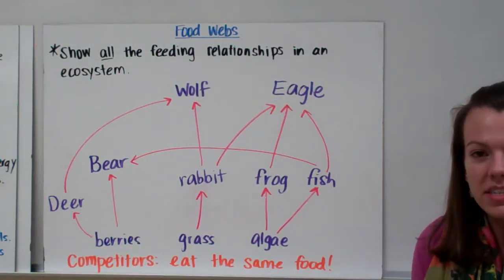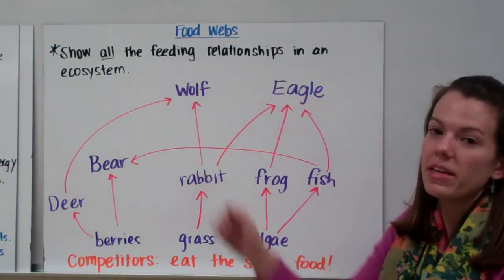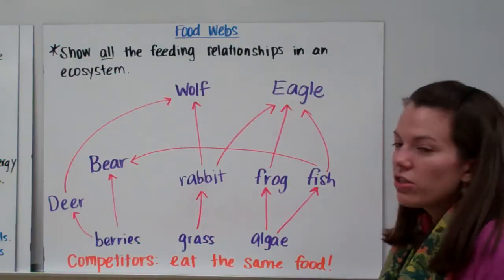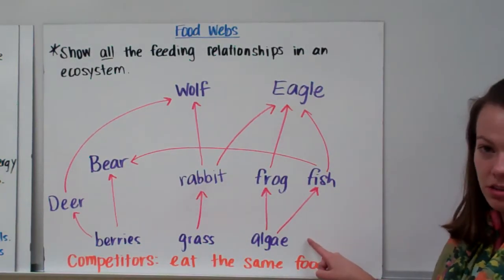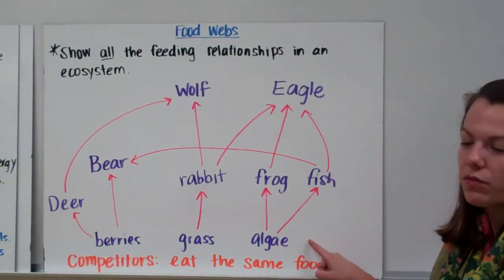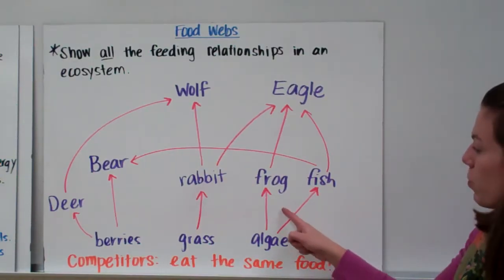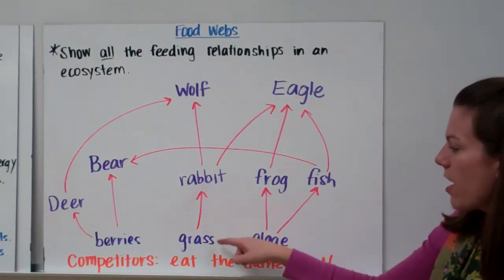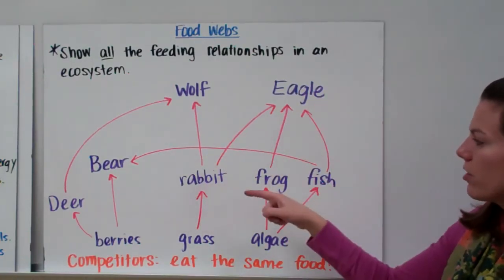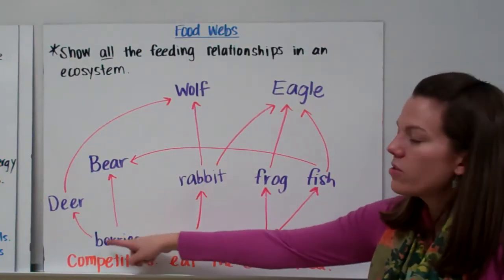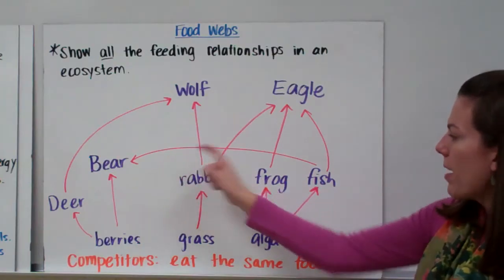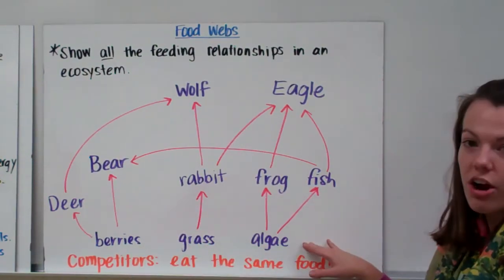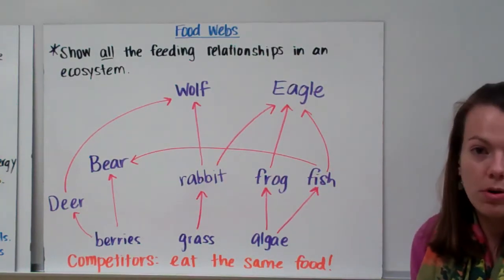Let's look at food webs. You've probably seen diagrams like this before — they show all of the feeding relationships in an ecosystem, not just one thing eating another, but what everything is eating. We have berries, grass, and algae. They all get energy from the sun, so they are producers or autotrophs. A frog and a fish are both eating the algae, with arrows pointing to the frog and fish because they are getting the energy. An eagle eats the frog and the fish. A rabbit eats the grass, and then a wolf or an eagle can eat the rabbit. A bear can eat the berries or a deer can eat the berries, a wolf might eat the deer, and the bear might also eat fish — making the bear an omnivore. The berries, grass, and algae are producers; anything eating something else is a consumer or heterotroph.